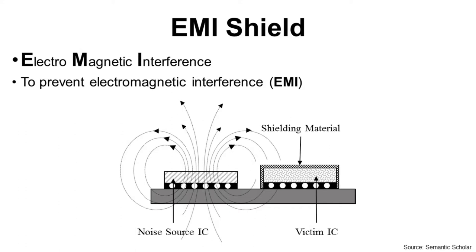What is EMI shield? EMI stands for Electromagnetic Interference. EMI shield is to prevent EMI. In this picture, we have noise source IC and victim IC. Noise source IC generates electromagnetic wave and victim IC can be damaged by electromagnetic wave. In this case, we can coat shielding material over victim IC to prevent EMI.